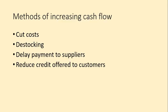Methods for increasing cash flow include: first, cutting costs, which might mean laying off staff — difficult but possible. Second, destocking — selling items you've already made without necessarily creating new ones. For a clothes manufacturer, you'd sell existing stock for big orders without making new clothes, since you already have the stock and don't have to pay to create it. Third, delaying payments to suppliers — for example, not paying for materials for an extra month, though suppliers might not like it and could stop supplying you.